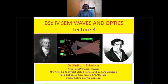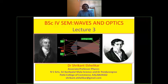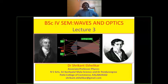In the previous lectures 1 and 2, we discussed the basics of interference. In the second lecture, we discussed interference phenomena: constructive and destructive interference, Young's double slit experiment, and we derived an expression for fringe width beta equal to lambda D by d.